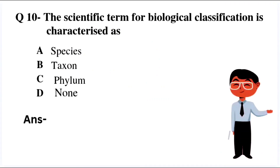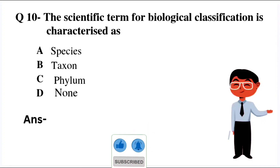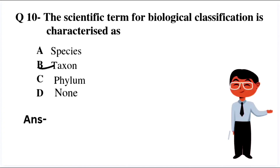Question number 10: The scientific term for biological classification is characterized as: Option A: species. Option B: taxon. Option C: phylum. Option D: noun. The term used for biological classification is 'taxon', from the word taxonomy, which refers to biological classification. Option B is the right answer.